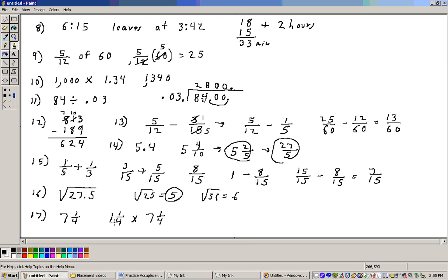To do this, switch these to improper fractions. Four times one is four, plus one gives me five-fourths. So that's five-fourths times, this would be four times seven is 28, plus one more is 29, 29-fourths.